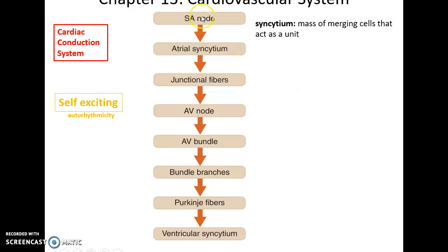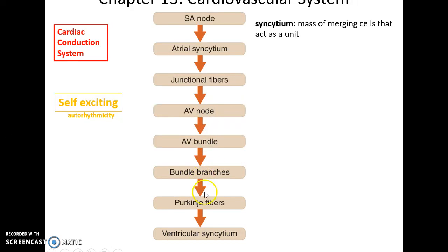To summarize the conduction pathway: SA node to the atrial septum tissues spreading current through the atria, to the atrioventricular node with a slight delay, then through the atrioventricular bundle to the bundle branches, to the Purkinje fibers that spread the impulse to the ventricular tissue — that is the cardiac conduction system.